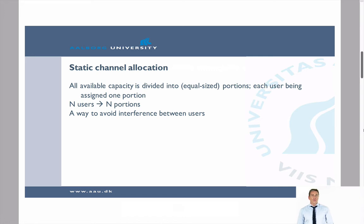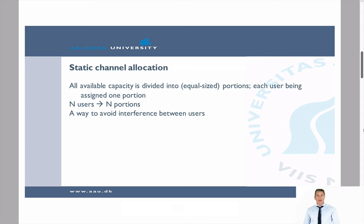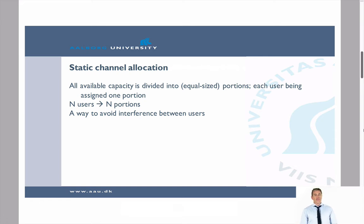We are talking about static channel allocation. The idea is that we are dividing all the available capacity into often equally sized portions, where each user is assigned one portion. So if we have N users, we are splitting the channel into N portions. In this way we can avoid interference between the different users.